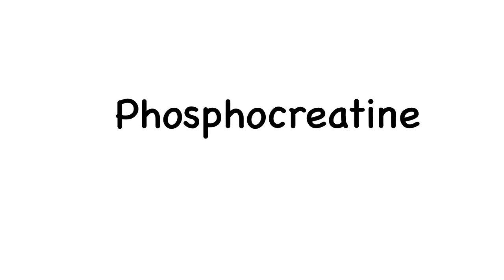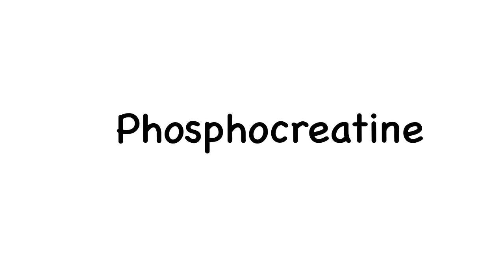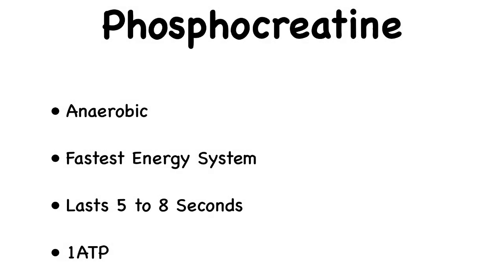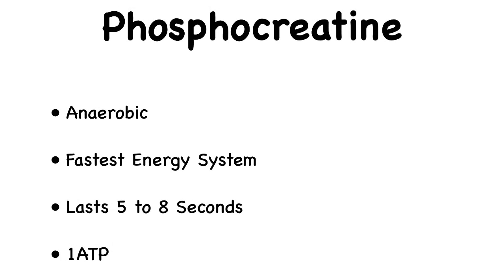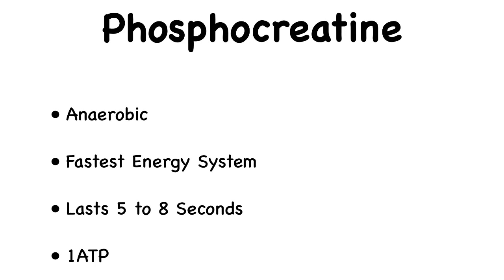The first system we'll be looking at is the phosphocreatine system. The phosphocreatine system is the quickest energy system used by our bodies. It does not require oxygen but can only be used in small bursts, usually from 5 to 10 seconds.